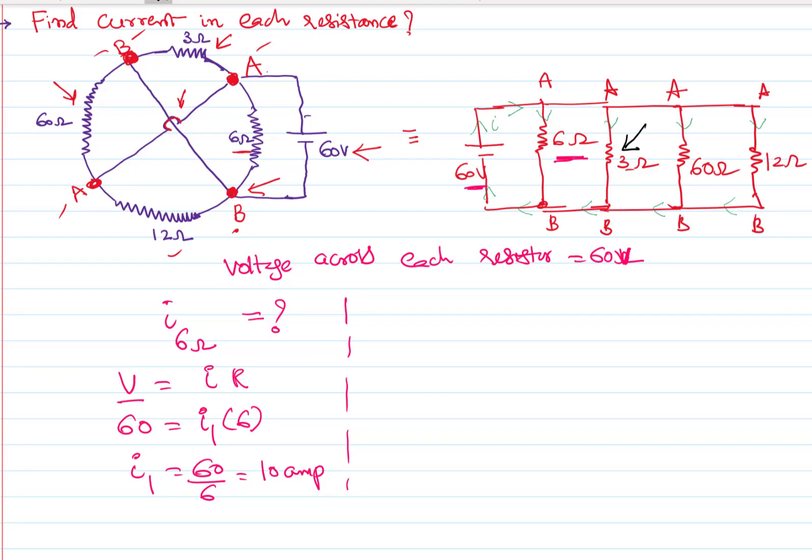For example, if I have taken the next resistance - now I want the current across this 3 ohms. Again I will use the same formula: V equals IR. V is 60 volts, I2 I want to find out, R is 3. So I2 will be 60 by 3, that is equal to 20 ampere.